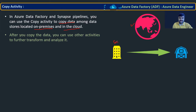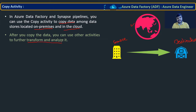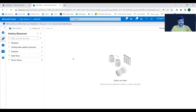After moving data to your destination — for example, your destination may be blob storage, data lake, or very importantly a data warehouse like SQL Server or another database — you can then transform and analyze the data. You are bringing data from one location to another location to use it for some purpose.